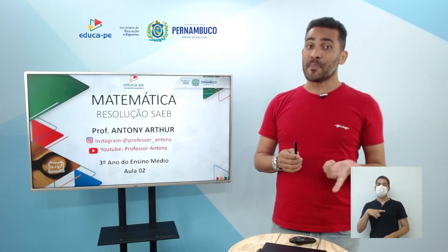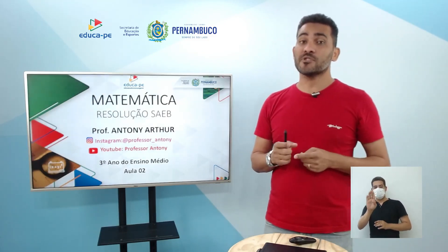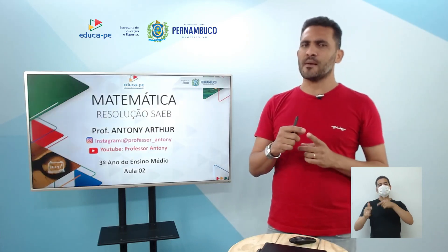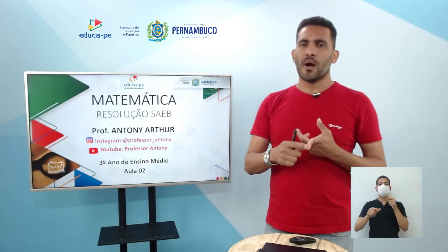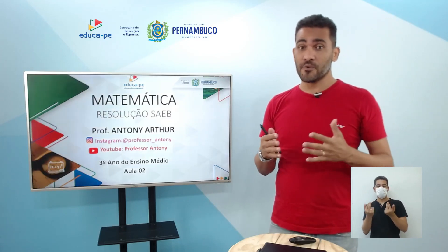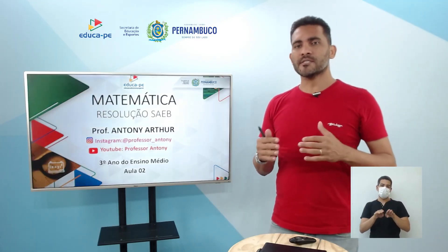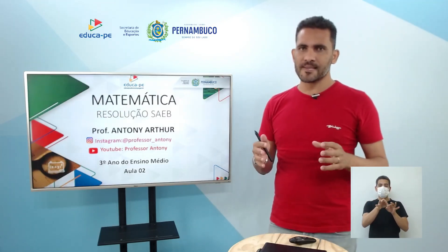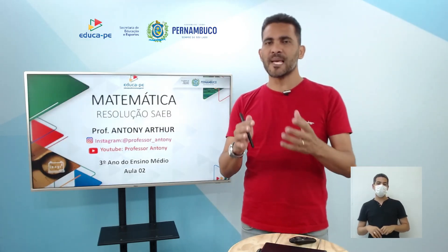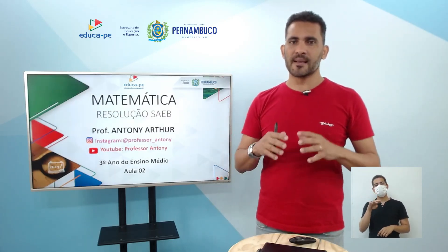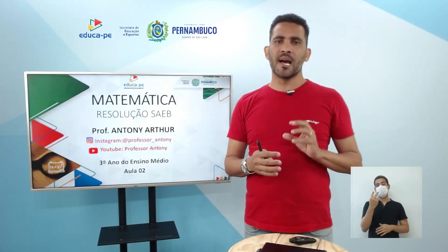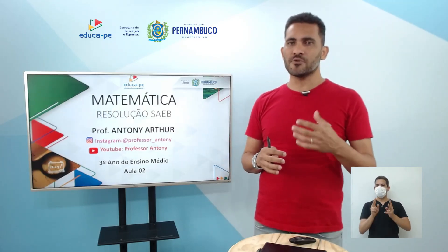Na primeira parte, a gente trabalhou os descritores 1 e 2, que, de forma resumida, trabalhavam as razões de semelhança, semelhança entre figuras e proporcionalidade, e as relações métricas no triângulo retângulo. A gente focou um pouquinho sobre o Teorema de Pitágoras, que é uma relação métrica importante. Agora, nessa parte 2, a gente vai dar continuidade e trabalhar mais dois descritores.